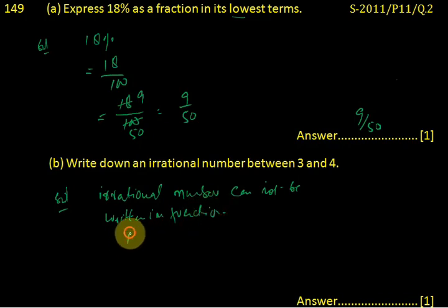For example, pi has a value of 3.141 with non-repeating numbers continuing.